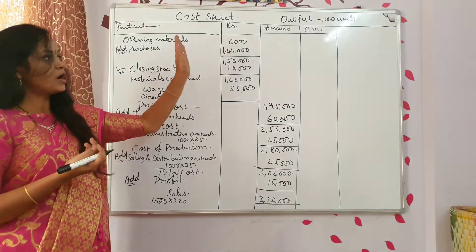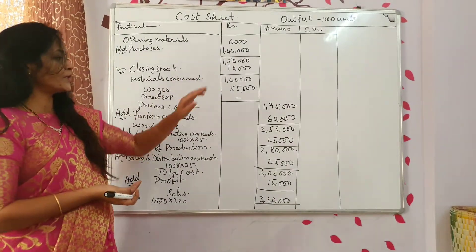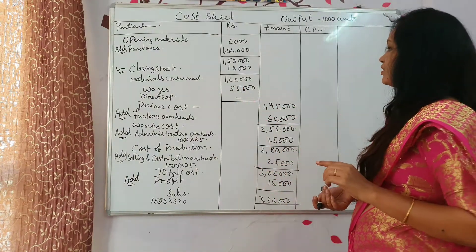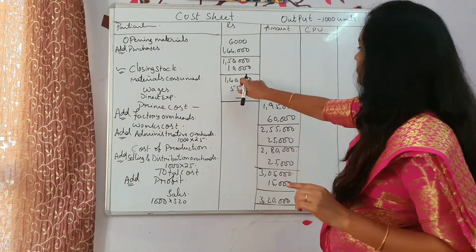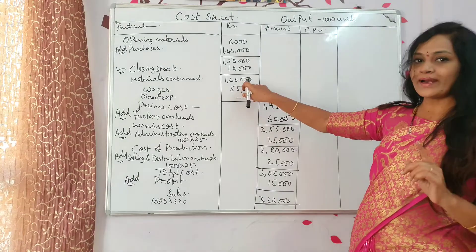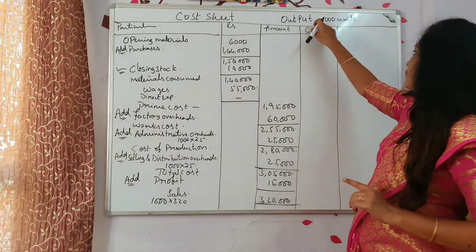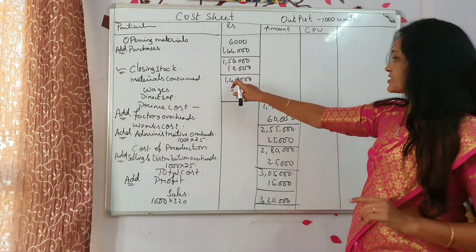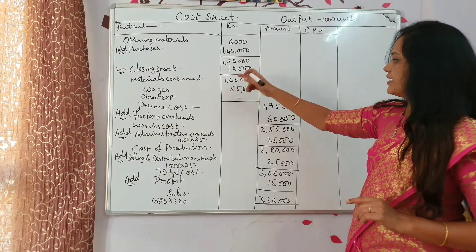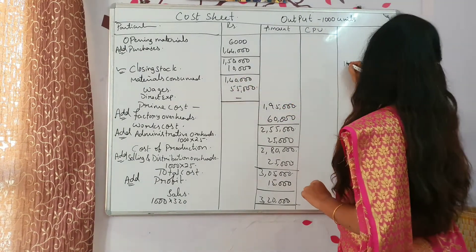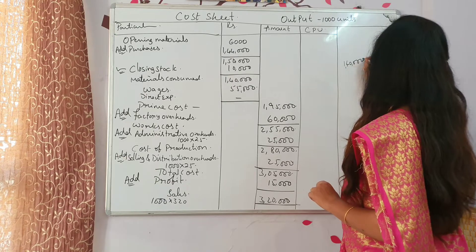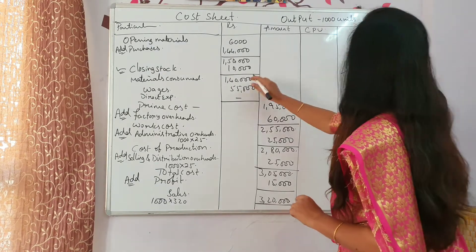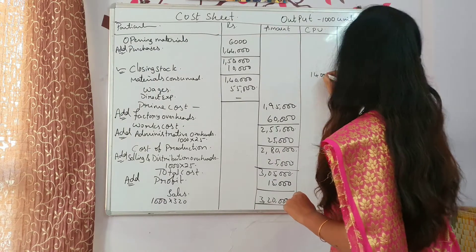Now, how to find out cost per unit? For each cost element you have to find out the cost per unit. What is the total material consumed? 1,40,000. Total number of units: 1000. So each unit cost is 1,40,000 divided by 1000 — you will get 140. So here cost per unit is 140.